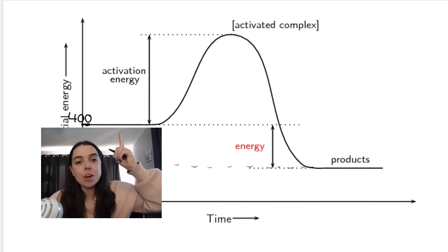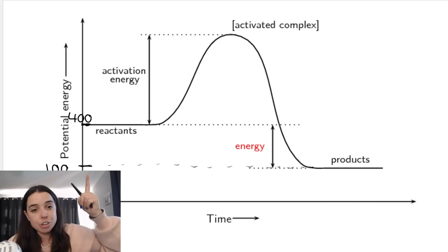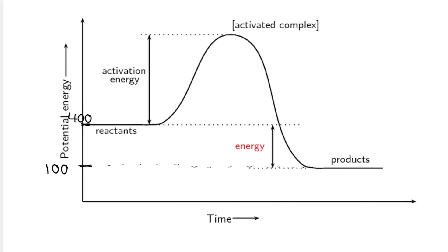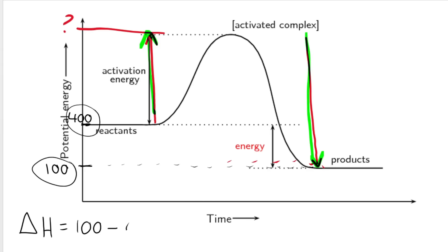In this case, the energy of the reactants is 400 kJ/mol and the energy of the products, which you can read off the graph, is 100 kJ/mol. What happens in this reaction is we take in energy for the reaction to start — that's called activation energy. Then we reach the activated complex. When the products are formed, energy is released, resulting in the energy of the products being 100. So there was more energy released than was taken in. We calculate delta H as 100 minus 400.